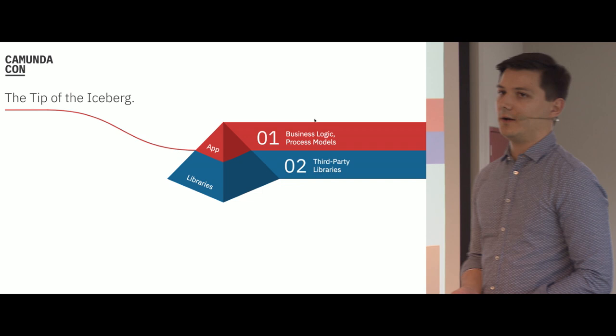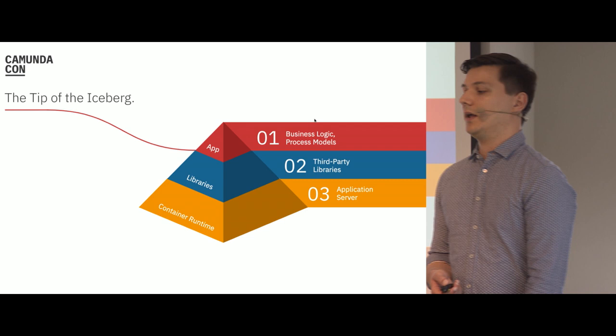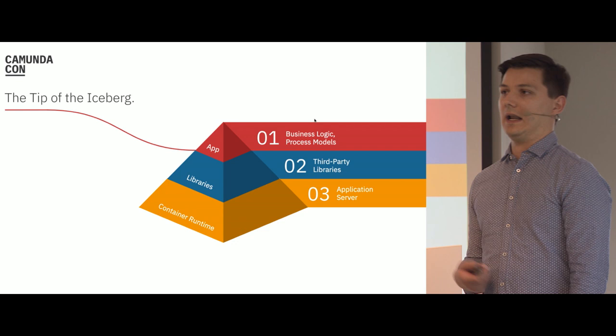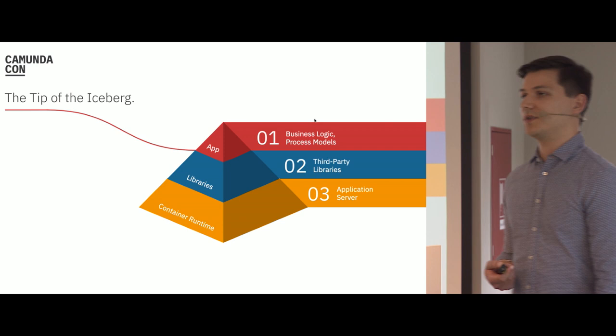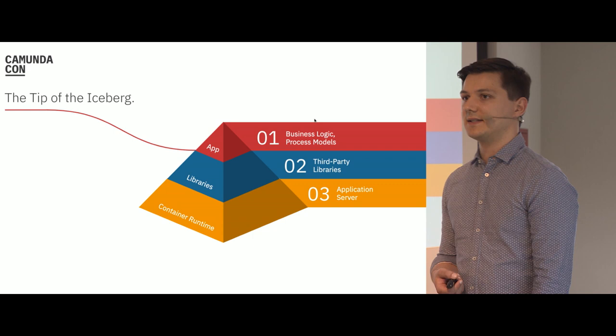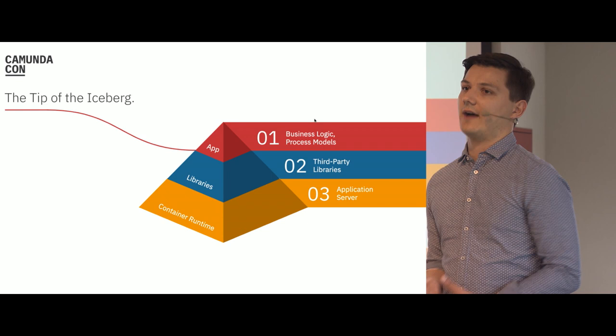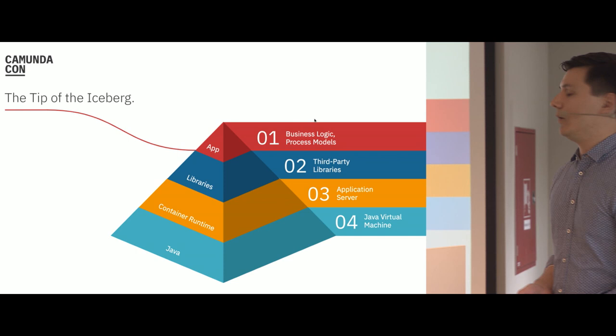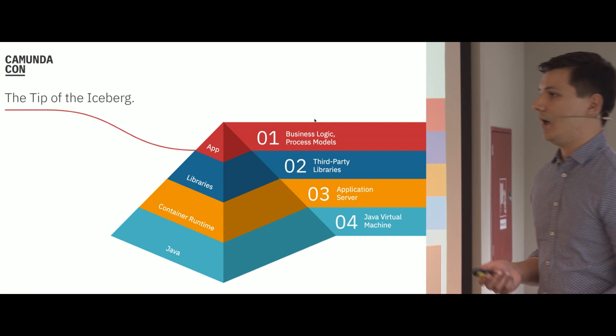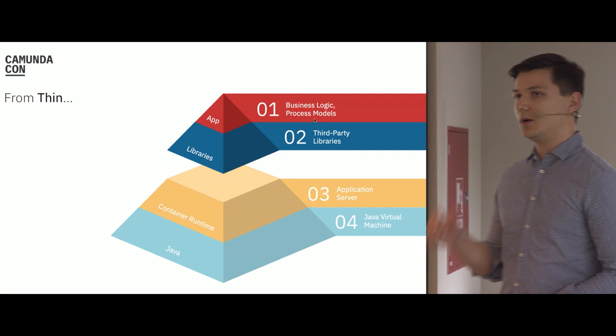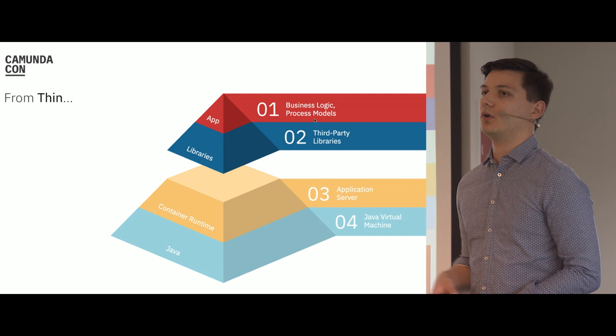App plus libraries won't run on their own, so they are highly dependent on a container runtime. A container runtime is usually represented by a Java application server like Tomcat or Wildfly. It provides a data source so we can connect our process application with the database, and also a web server which serves our front-end to the user. All three layers run inside the Java Virtual Machine. In the past, the app plus libraries layer was included in a Java archive file which needed to be deployed on a traditional Java application server.